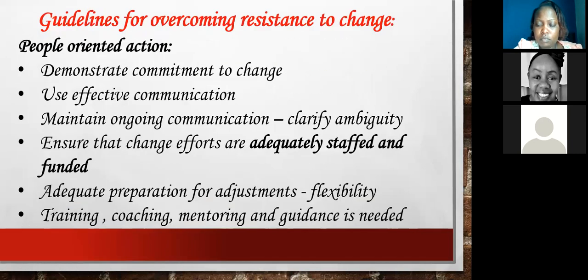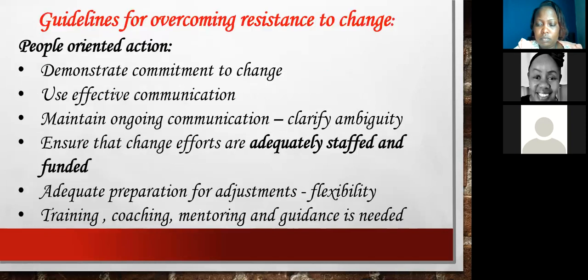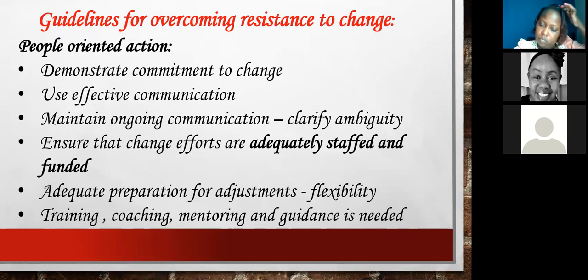Once you have done your behavior check and tried to remedy each behavior, there are two ways of overcoming resistance to change. The first is people-oriented action. Demonstrate that you are committed to the change. As a leader, show that you are there to run through it completely to the end — you have put money and resources aside, you care for your people, and you want them as committed as you are. Secondly, use very clear systems — communicate about the change, update, gather feedback — and leave no gaps.